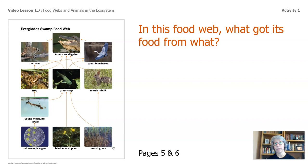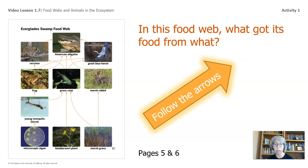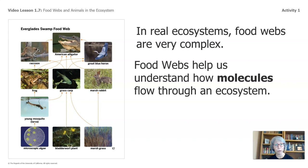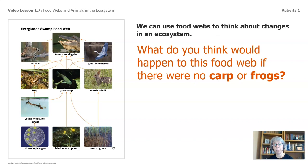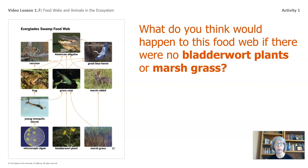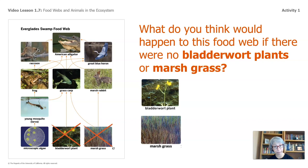Back in the book, we looked at page 17 and we studied the Everglades Swamp Food Web. You can follow along in your packet pages five through six. We have a few questions to ask about this food web that you can record your answers. In this food web, what got its food from what? Remember to follow the arrows. We can use food webs to think about changes in an ecosystem. What do you think would happen to this food web if there were no carp, or frogs? What do you think would happen if there were no bladderwort plants or marsh grass?